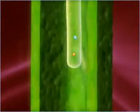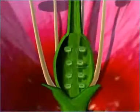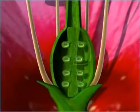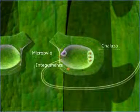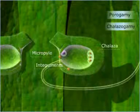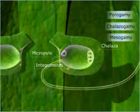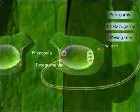The pollen tube, now carrying the vegetative nucleus and two male gametes, grows down into the ovule. The entry of the pollen tube into the ovule through the micropyle, chalaza, or integuments is known as porogamy, chalazagamy, and mesogamy respectively. Porogamy is the most common of these.